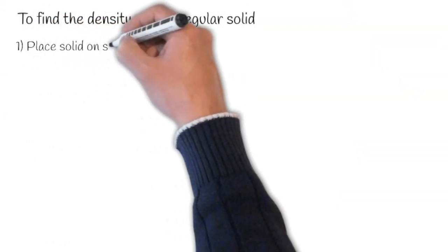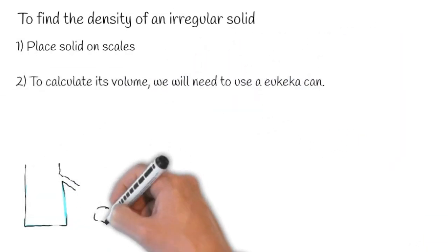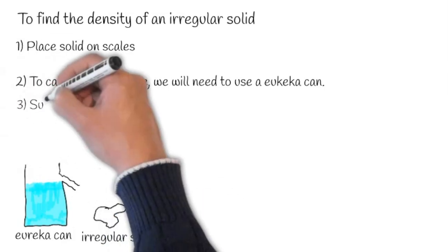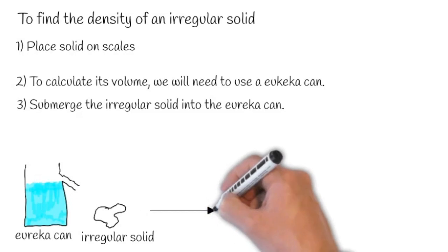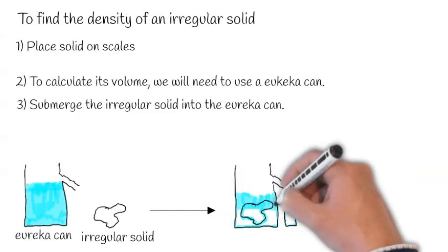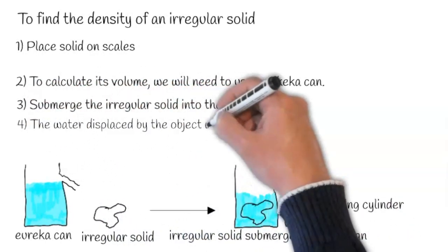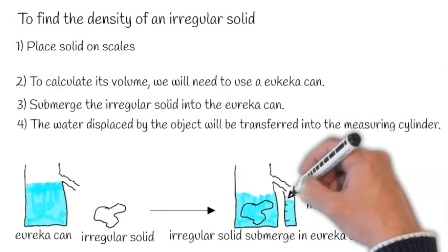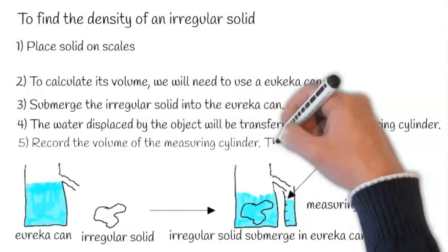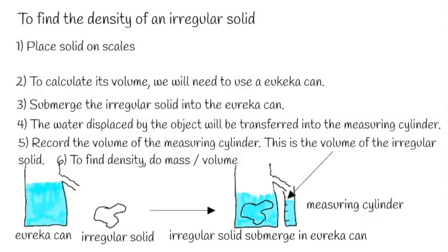To find the density of an irregular solid: place the solid on the scale. To calculate its volume, we need to use a Eureka can, which looks like this. Submerge the irregular solid into the Eureka can. The water displaced by the object will be transferred into the measuring cylinder, like here. Record the volume of the measuring cylinder—this is the volume of the irregular solid. To find the density, divide the mass by the volume.